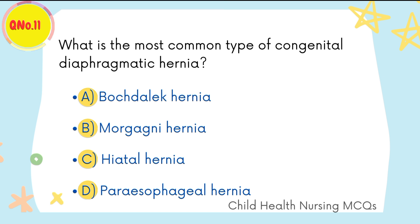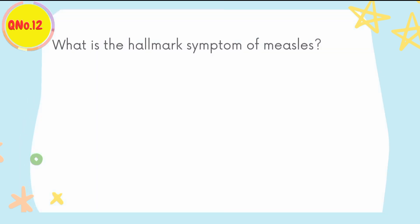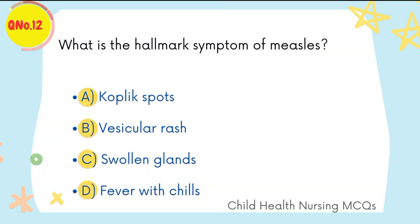A is the right option: Bochdalek hernia. Question number twelve: what is the hallmark symptom of measles?